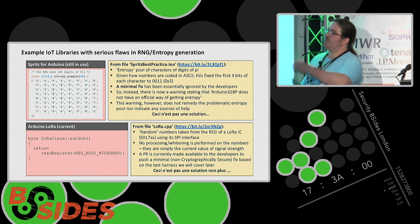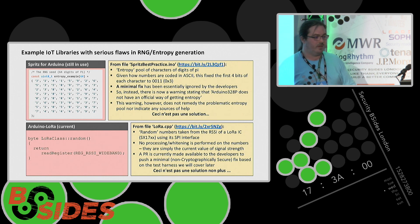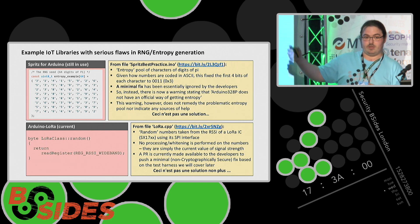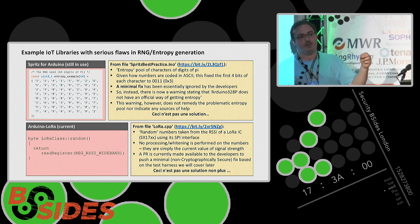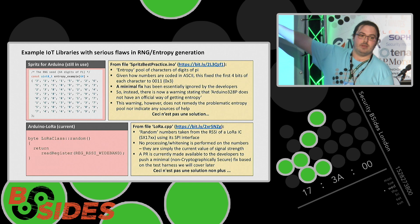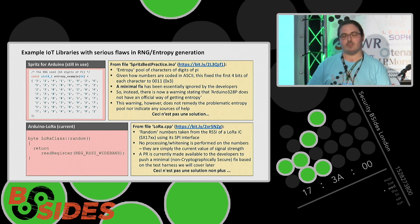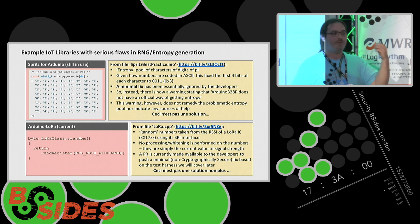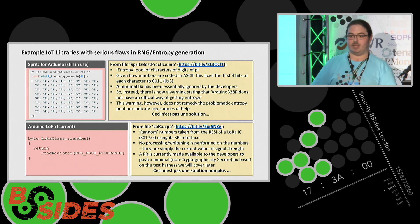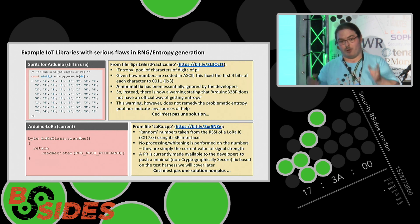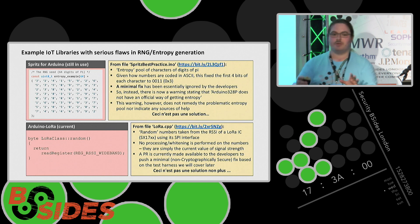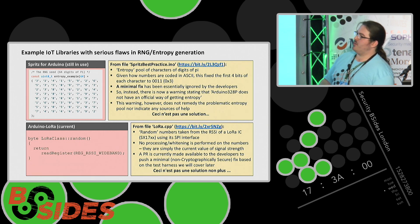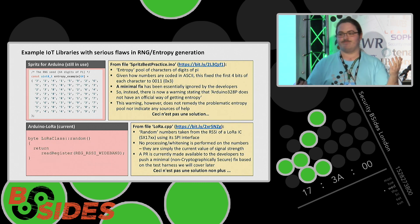Other examples. Top left, you will see an excerpt from the Spritz implementation for Arduino. This is still in use. Their bestpractice.ino file has this as the RNG pool: the first 64 characters of Pi. For those of you who know a little bit of ASCII magic, you're probably realizing that means that half of the RNG pool is 0011 guaranteed. That is a problem. I submitted a fix, which was absolutely bare minimum, and I got told, we're not going to push that. We're going to put a warning instead.